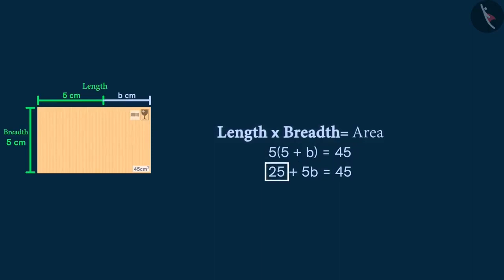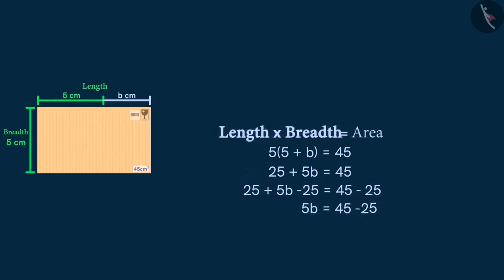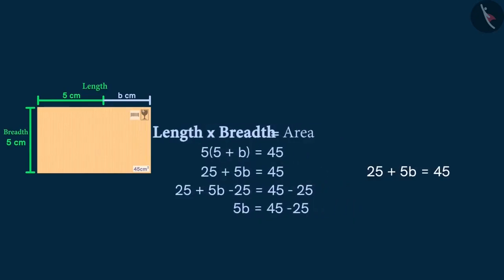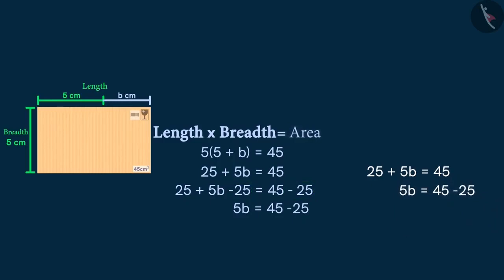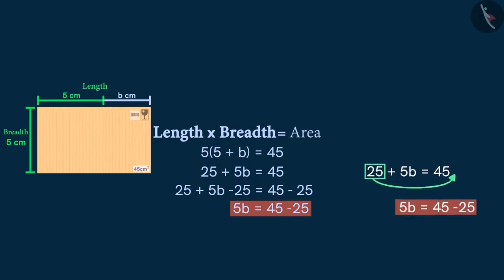Now, we will have to subtract 25 from both sides so that we can eliminate 25 from the left-hand side of the equation. On doing so, we get this new equation. But look at these steps carefully. Instead of subtracting 25 from both sides, can we directly transpose 25 from the left to the right-hand side? Yes, we can do that. When we do that, we see that this equation is the same. But an important thing to notice is that when we transpose 25, we change its sign — from plus 25, it becomes minus 25 as we transfer it.